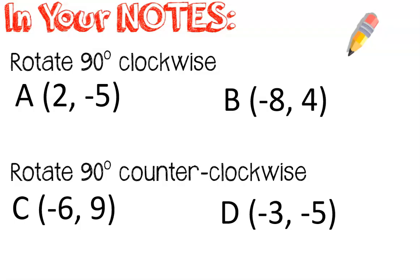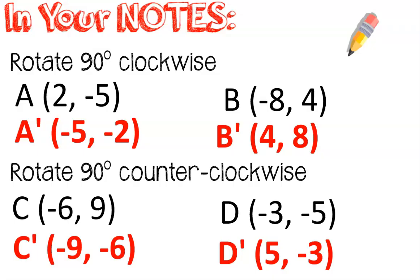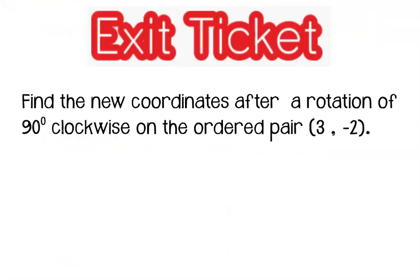Ready to see how you did? Let's take a look. These are the answers. Hopefully you got them all right. You swapped each of your coordinates and negated the right value. This concludes our lesson. I'd like for you to send me your answer to this exit ticket. Hopefully you've mastered how to rotate a coordinate point 90 degrees about the origin, either clockwise or counterclockwise. Thank you.